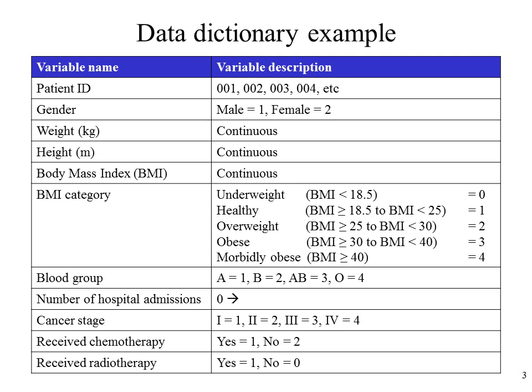Notice the variables received chemotherapy and received radiotherapy. Sometimes a yes/no variable has labels 1 and 2, and other times it's labelled 1 and 0. That's why I've listed both types in this data dictionary.